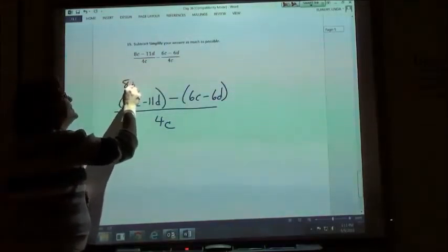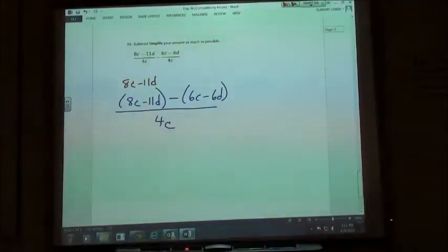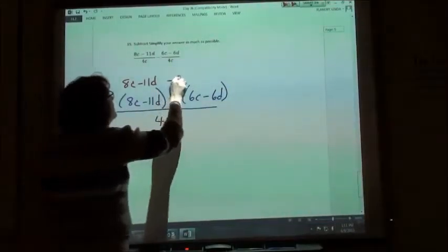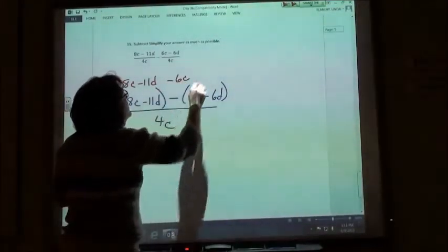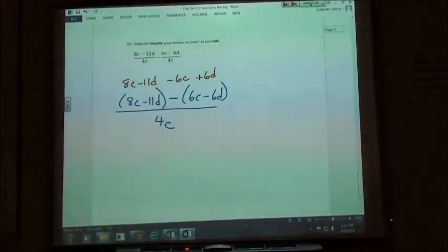8c minus 11d, right? Nothing I have to do to that one. But the other one has that minus sign in front, so we're going to write that as negative 6c plus 6d. Exactly. And we have to change those signs since there's a minus in front. Now we can combine our like terms.